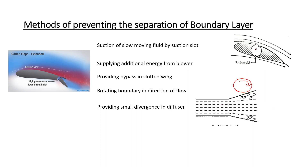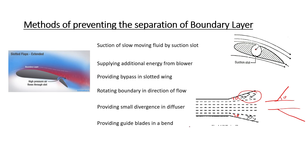You can provide small divergence in a diffuser. If you have a divergence angle, you can reduce it to lower separation chances. Then you have to avoid abrupt separation. Also, provide guide blades in a bend — if you have fluid in a bend, you can attach guide blades. This is the boundary layer control method. You can increase your balance.